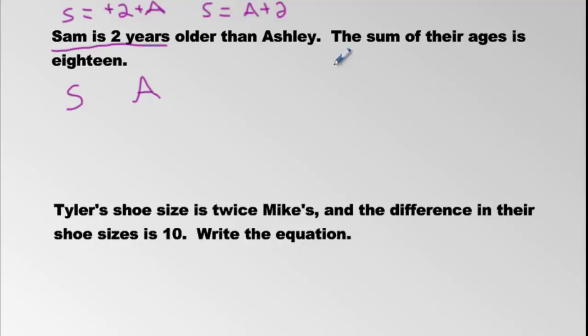Now what do we know? The sum of their ages is 18. So Sam's age plus Ashley's age is equal to 18. So they can be nine and nine. They can be six and 12. You know, it could be 11. But no, they can't be any of those. Those numbers add up to 18, but Sam has to be two years older.